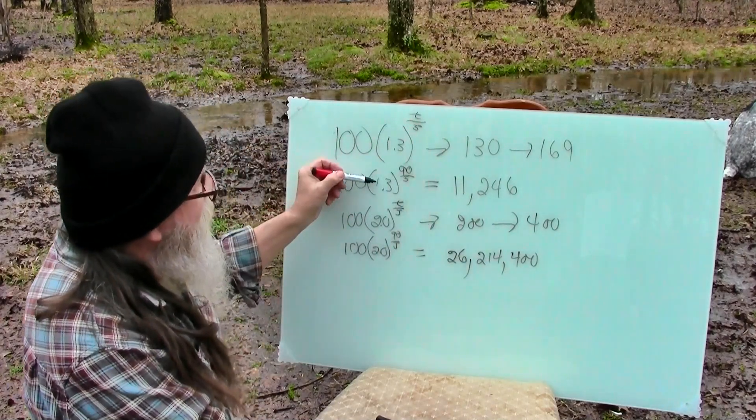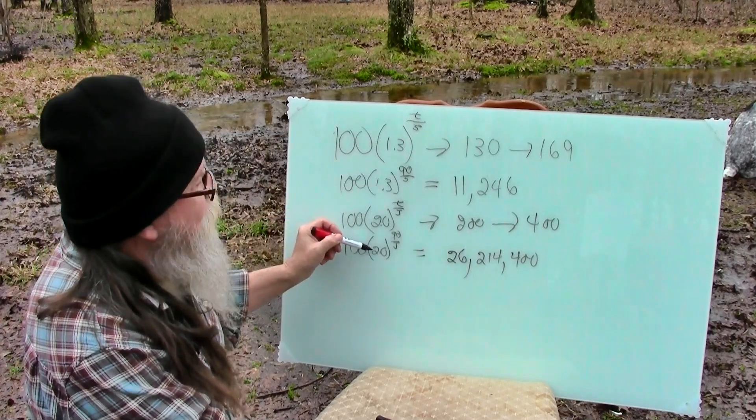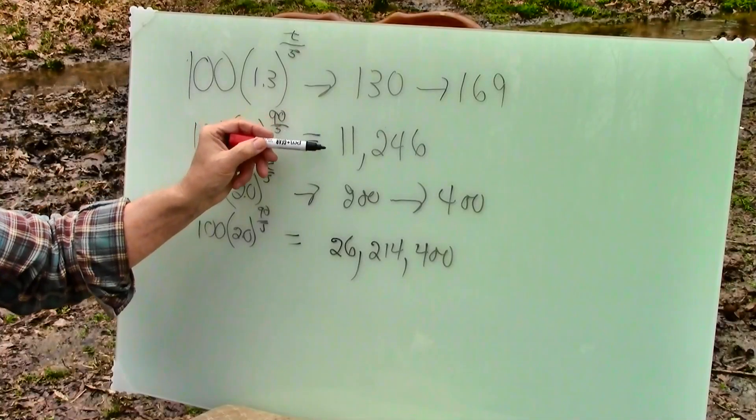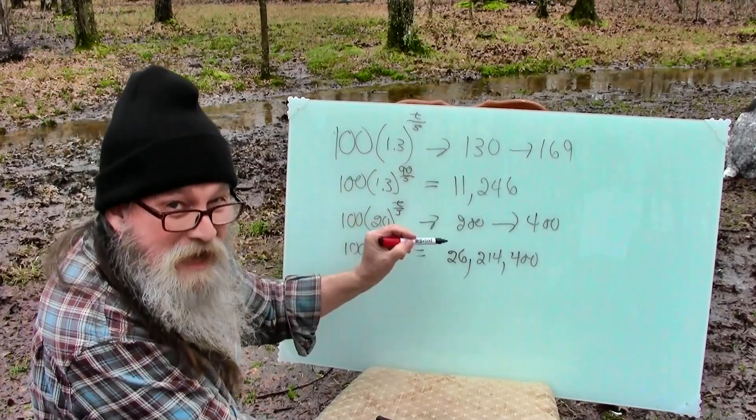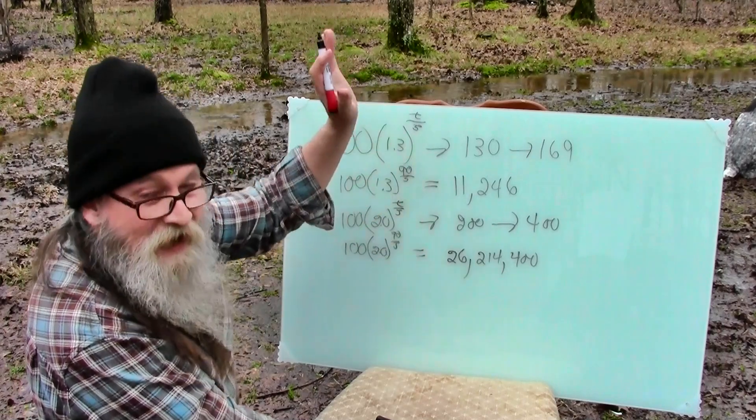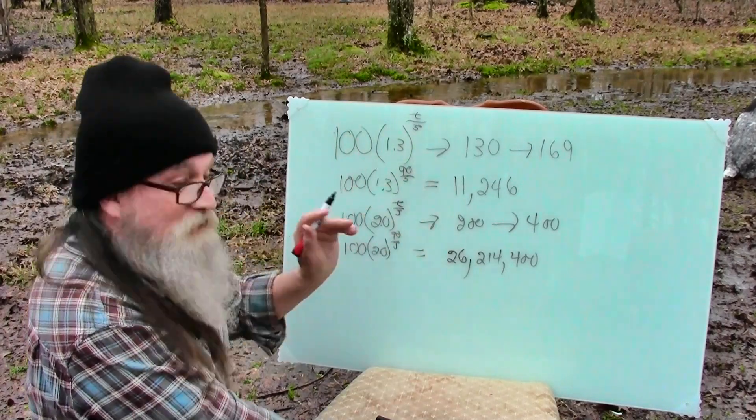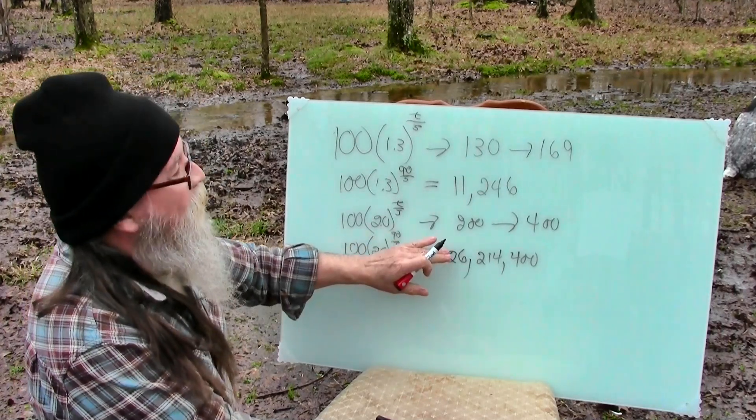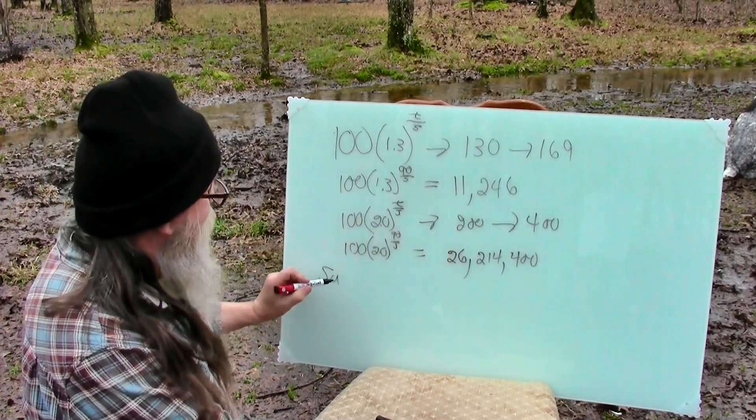Just going from 1.3 infected people to 2.0, we went from 11,000 people being infected to 26 million people being infected. So that's, again, that's the exponential growth. Now, hang on, because this is really critical too, is this is how many new people are being infected 90 days out.